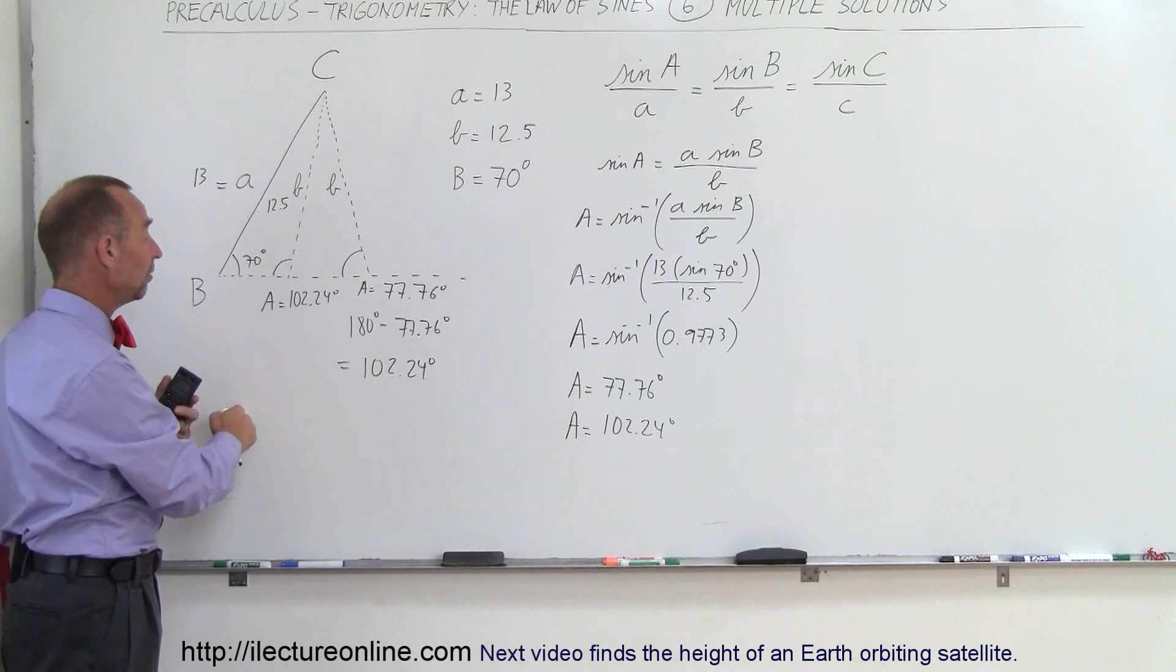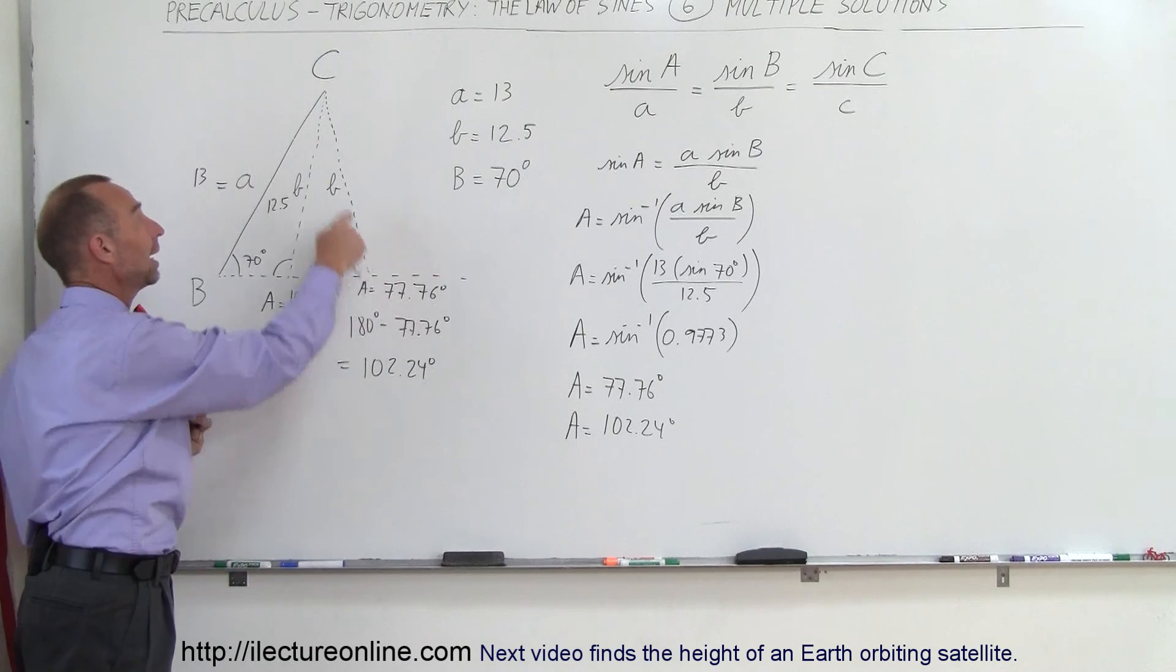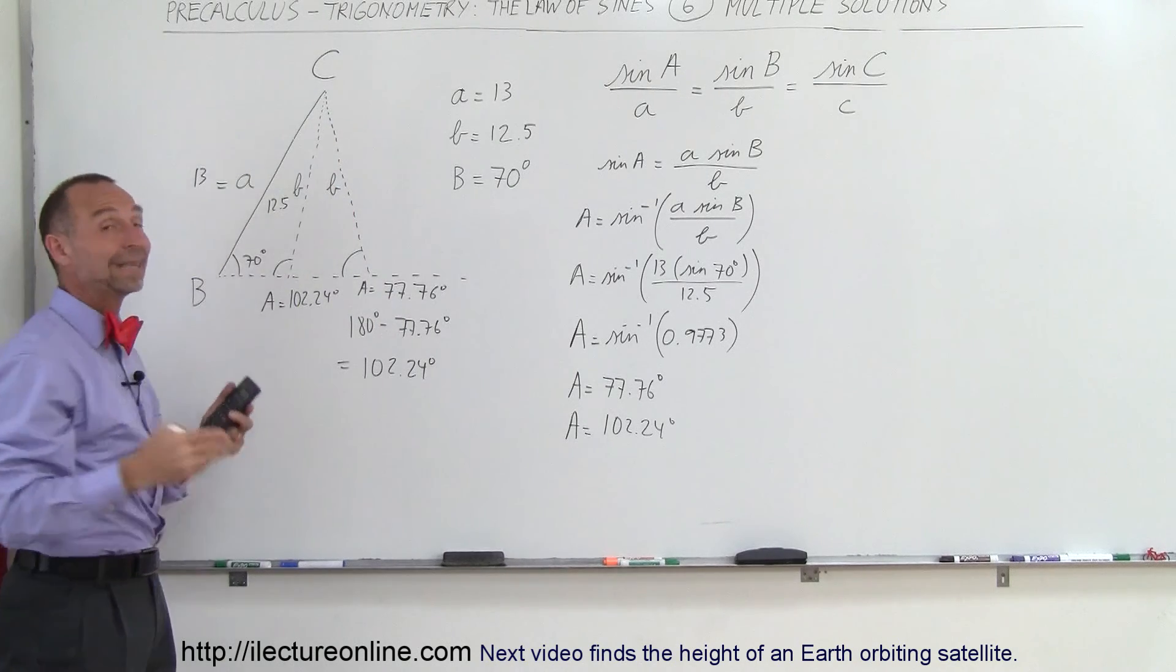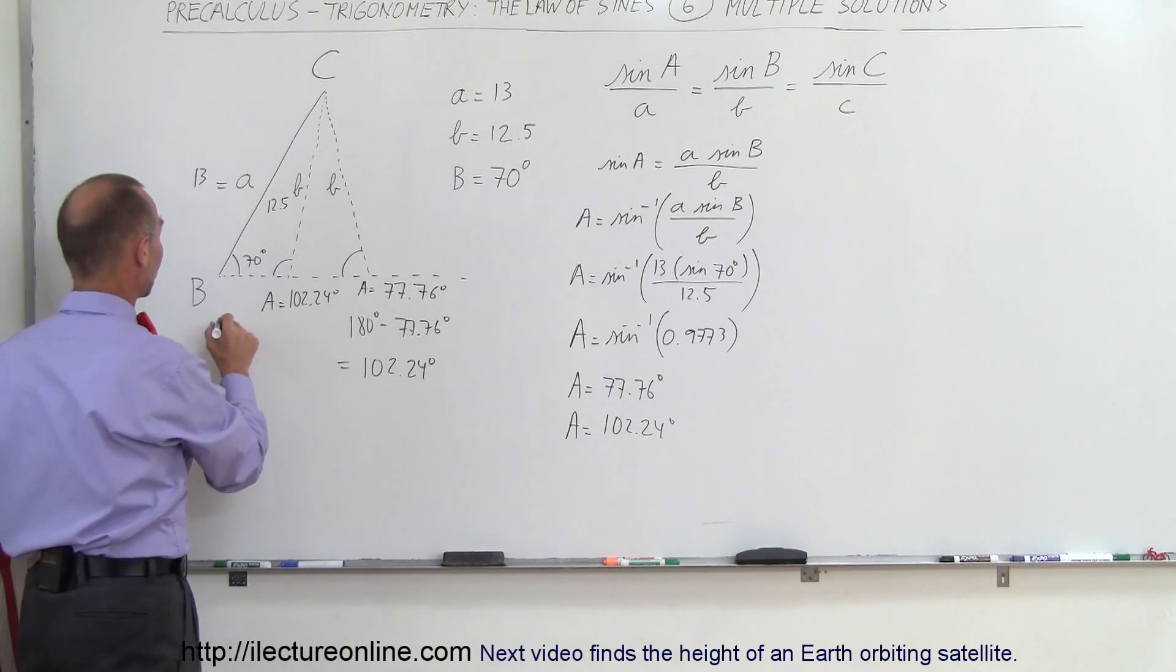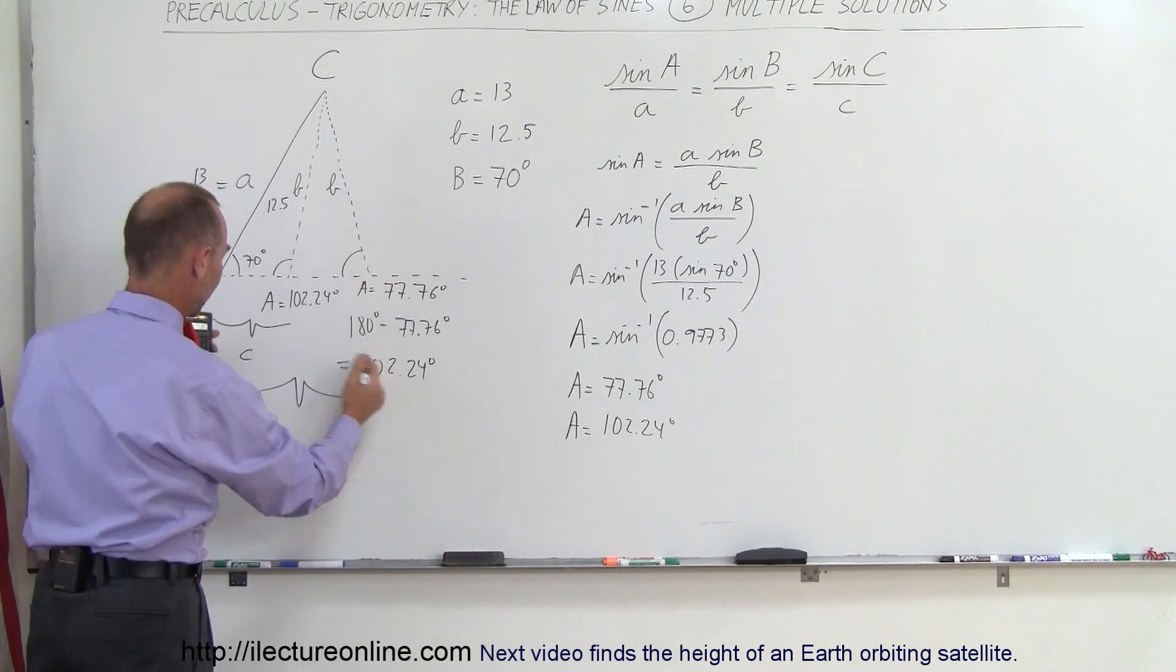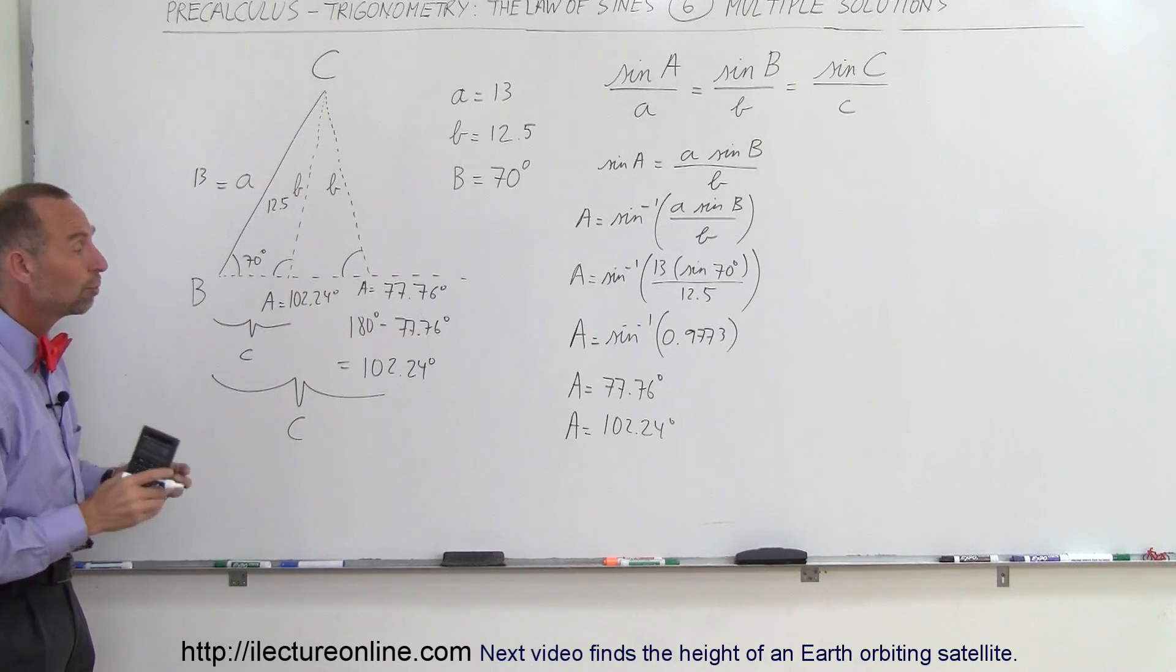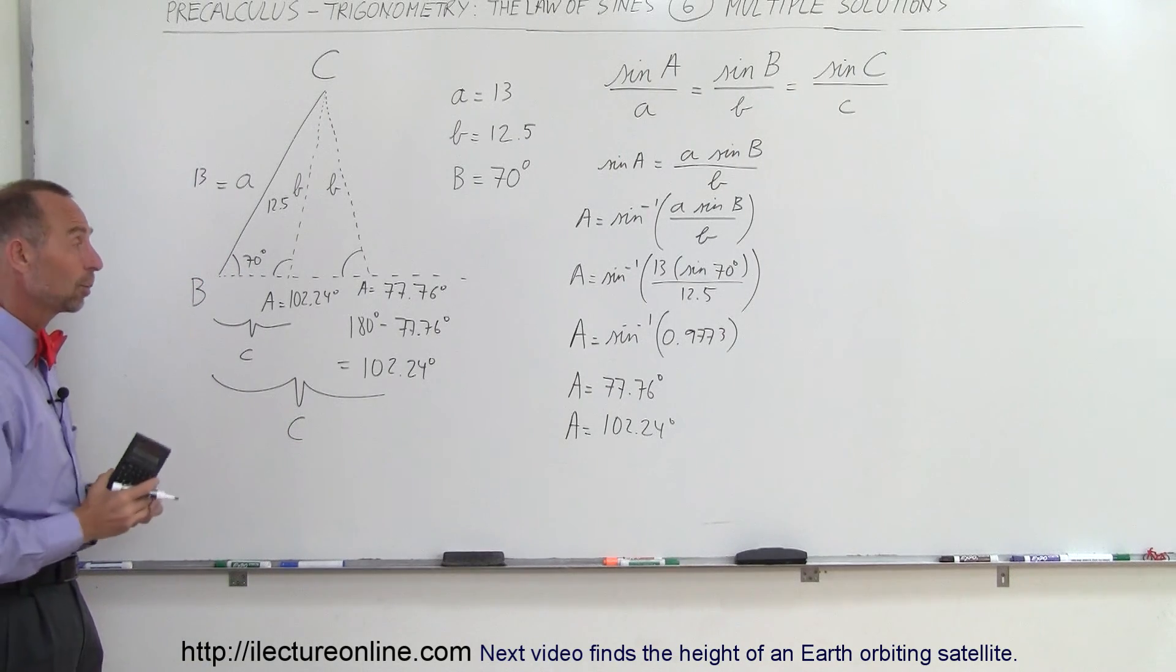What you do is take 180 degrees, subtract B, subtract A, depending upon which of these two you pick, and that will give you the appropriate value for C. Then you'll get two different values for side C. So again, there are two possible solutions to this particular problem.